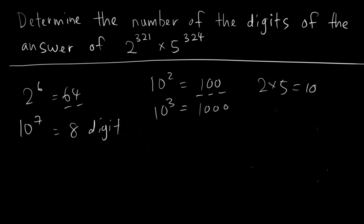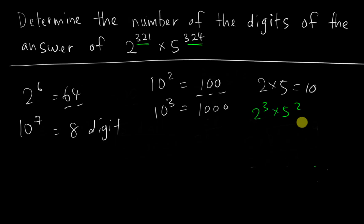But we have one small issue: the powers are not the same. If the powers are not the same, we cannot multiply them directly. For example, if we have 2 to the power of 3 multiplied by 5 squared, we cannot join them together straight away because they have different powers.